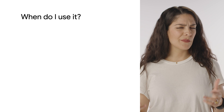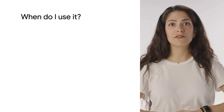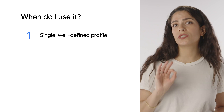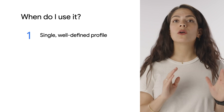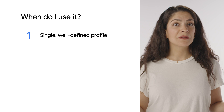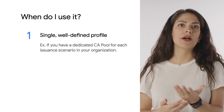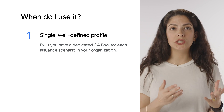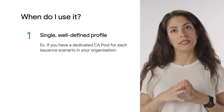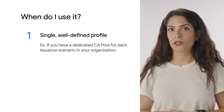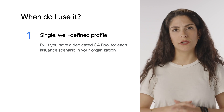So when should you use a certificate issuance policy? A good rule of thumb is if one or both of the following cases apply. Case one: your CA pool is intended to issue certificates according to a single, well-defined profile, meaning it's only going to do one thing. For example, if you have a dedicated CA pool for each issuance scenario in your organization, like each product group manages their own CA pools that are completely distinct from other use cases.